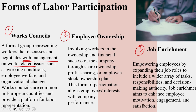The third form is job enrichment — empowering employees by expanding their job roles to include a wider array of tasks, responsibilities and decision-making authority. Job enrichment is distinct from job enlargement and aims to enhance employee motivation, engagement and satisfaction. When employees feel that they are more into the job and happy with it, they perform at their best. These are the key forms of labour participation.